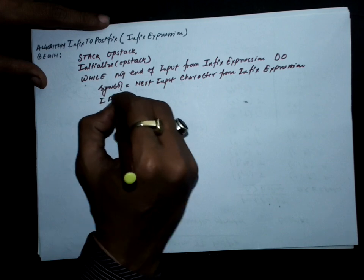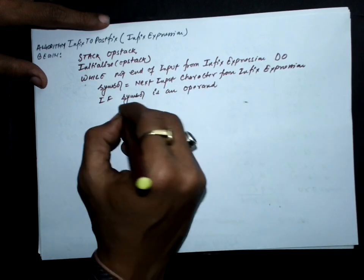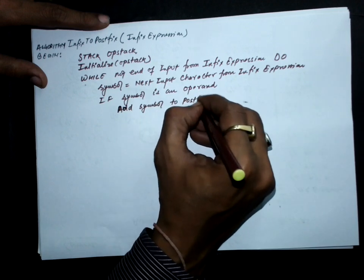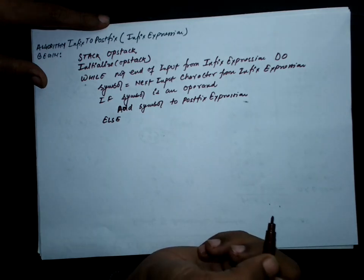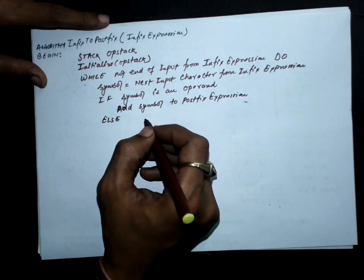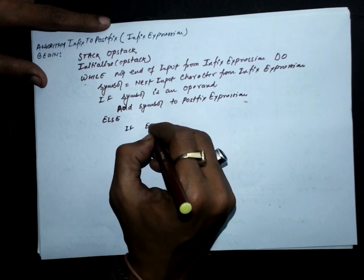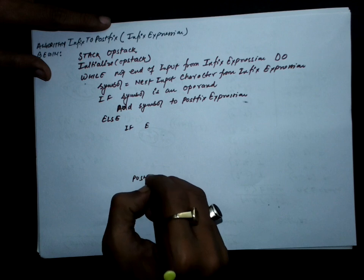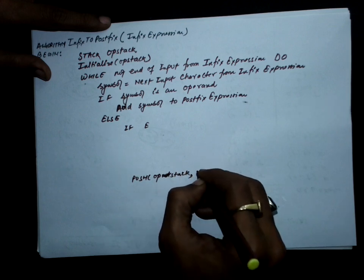We identify whether the symbol is an operand or operator. If the symbol is an operand, add it to the postfix expression. Otherwise — assuming our expression has only operands and operators — it is certainly an operator. If we have an operator and the stack is empty, push that symbol onto the OP stack.